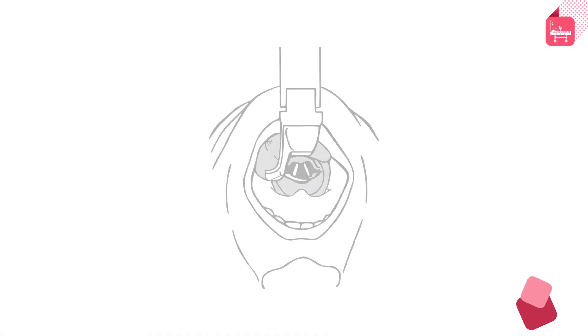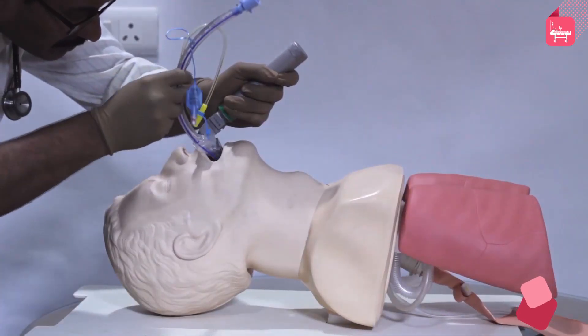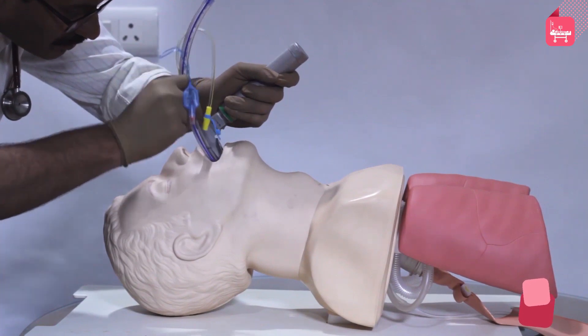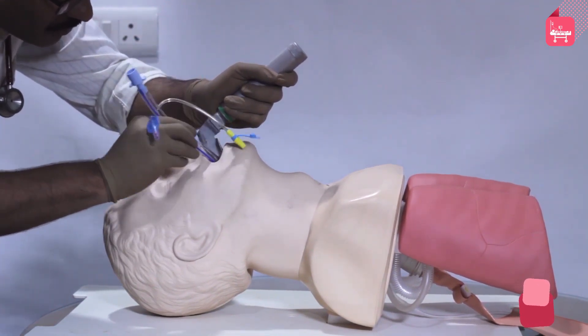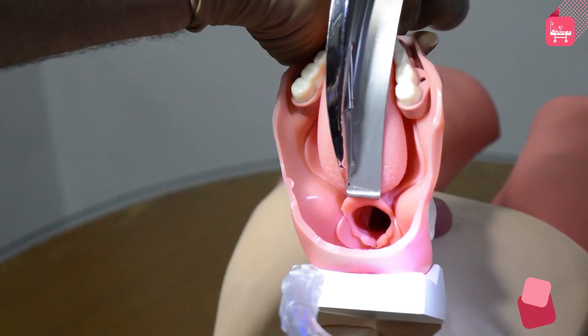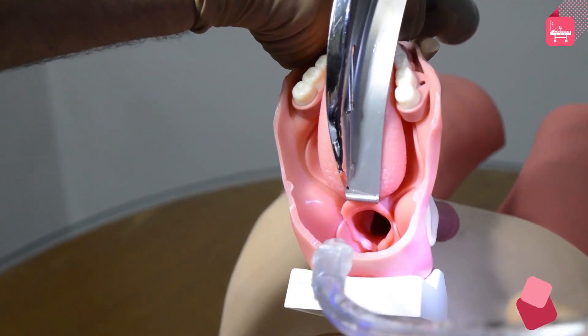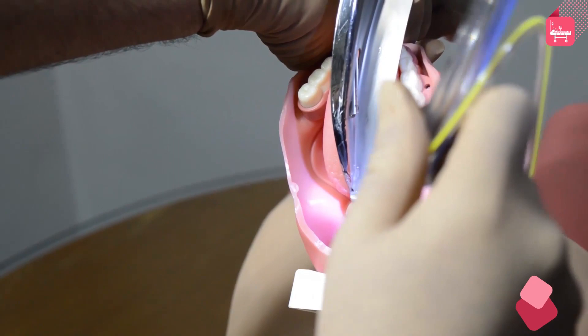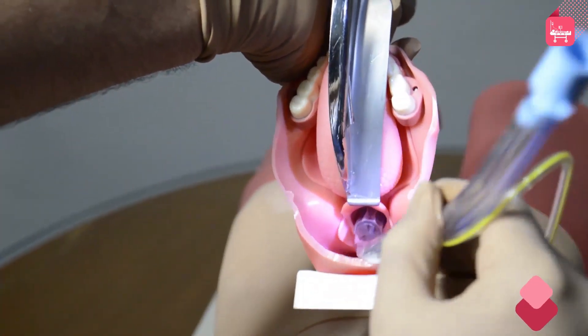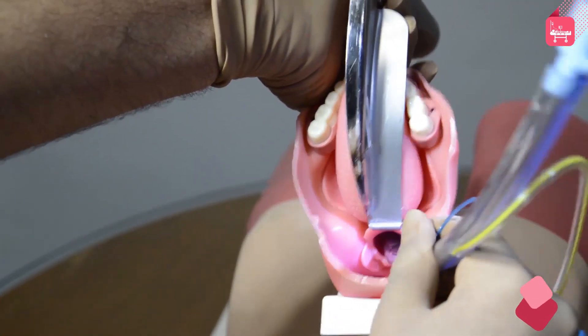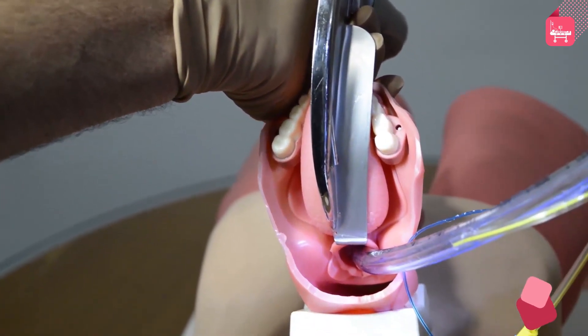View the vocal cords and laryngeal inlet. Endotracheal tube insertion: hold the endotracheal tube in the right hand, keeping its concavity toward the right side. Insert the tube through the oral opening. Advance the ET tube toward the vocal cords, maintaining visualization of the cords.